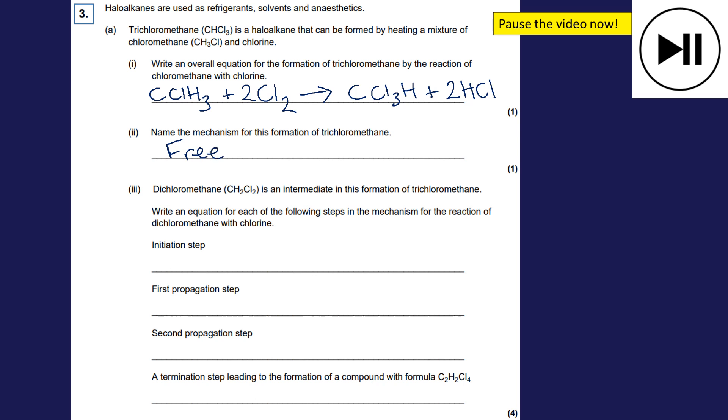Part three. The dichloromethane is an intermediate in this formation. Write an equation for the following steps in the mechanism for the reaction of dichloromethane with chlorine. The initiation is going to be chlorine molecule making two chlorine free radicals. First propagation step will be one of these free radicals reacting with my dichloromethane, which is CCl2H2. And that chlorine will take off the hydrogen. So it becomes HCl, leaving behind a CCl2H with a radical on that carbon. So what's happened is that chlorine free radical's come in and taken off one of those hydrogens.